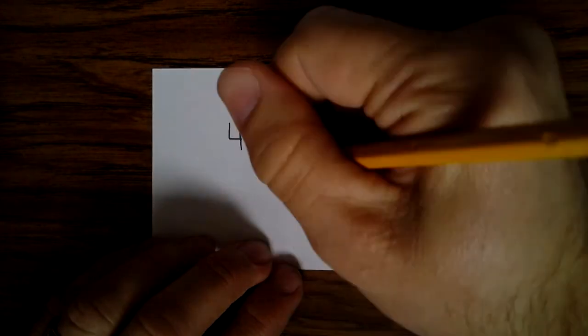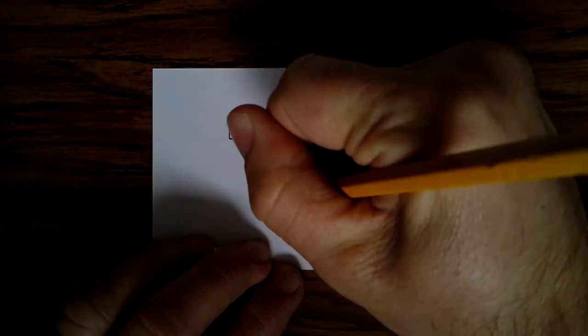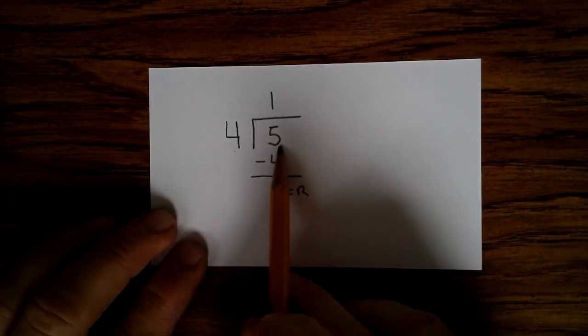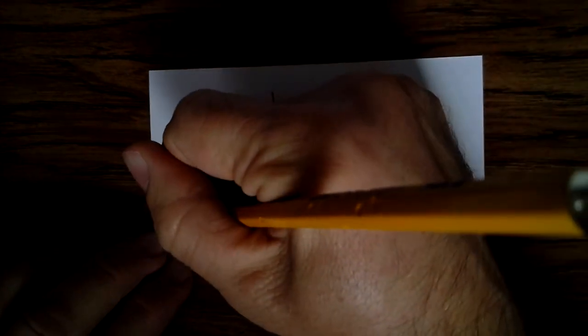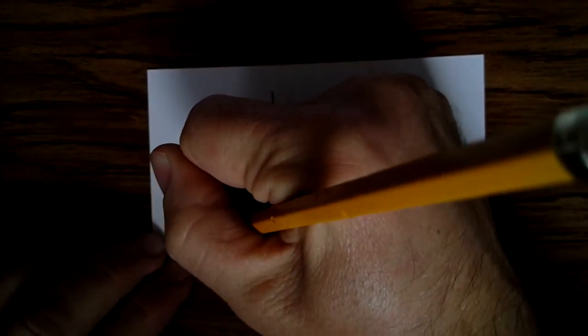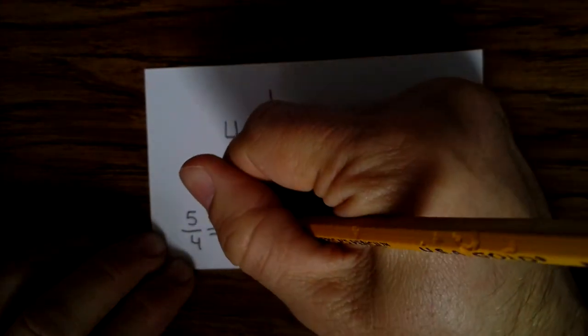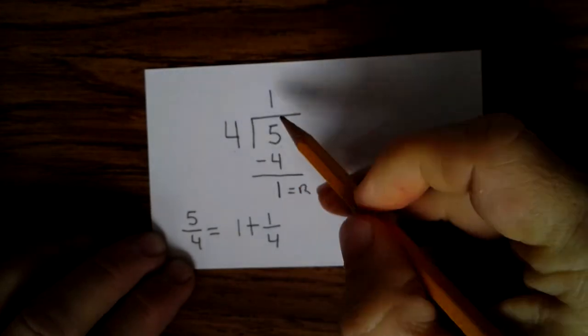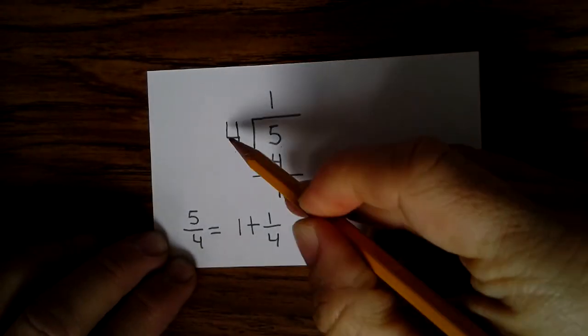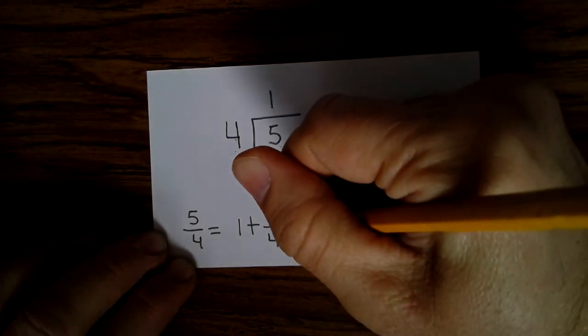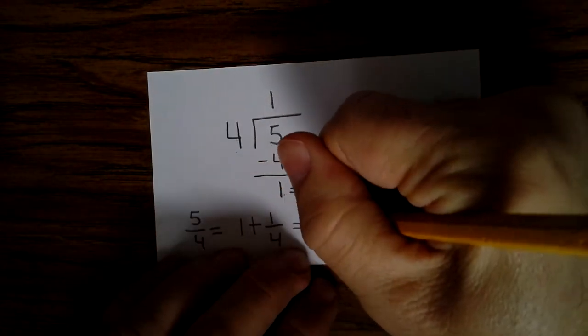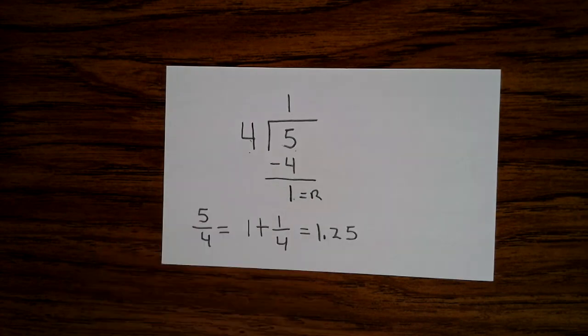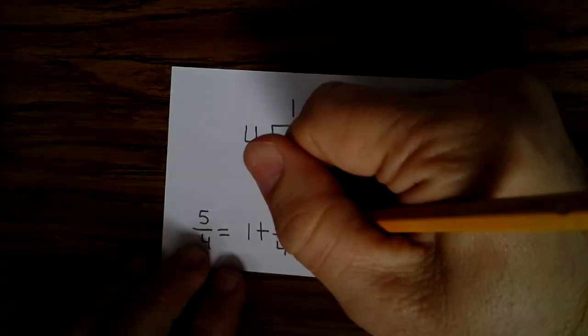We get 1. So our remainder is 1. So when we say 5 divided by 4, it would equal 1 plus 1/4. So we take the remainder divided by 4. And if you see, you'll get 1.25. Okay? So that's kind of how that works. And so this 1 came from here, and this 4 came from there. Okay?